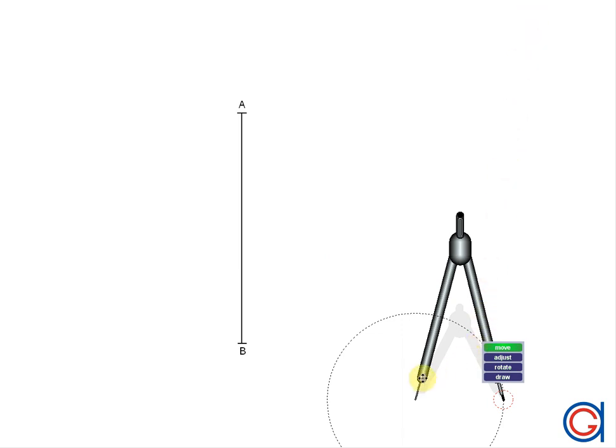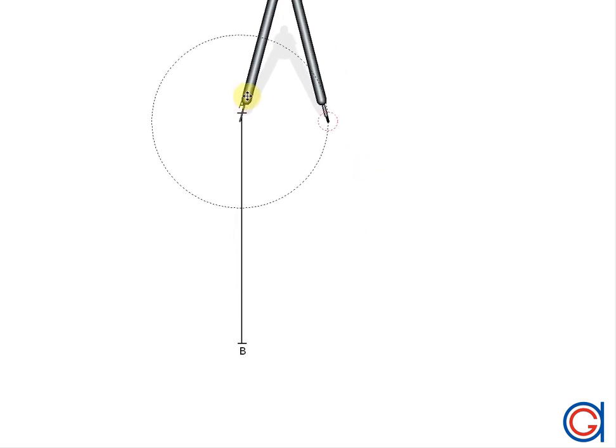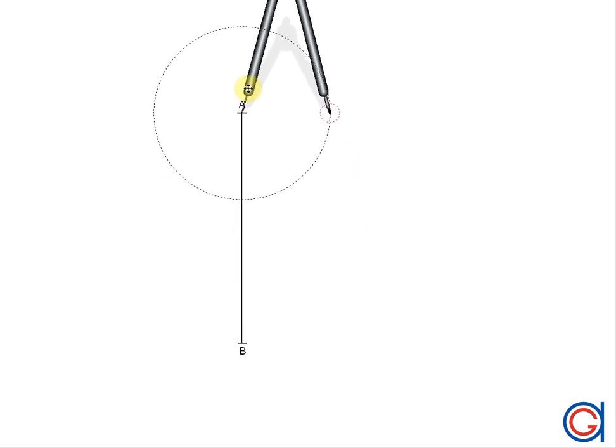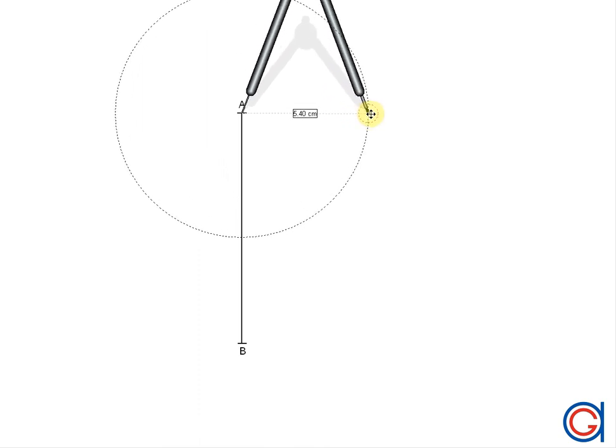The first step is to work out the perpendicular bisector of the given axis AB. To do this, we set the compass slightly longer than half the length of the line segment AB.